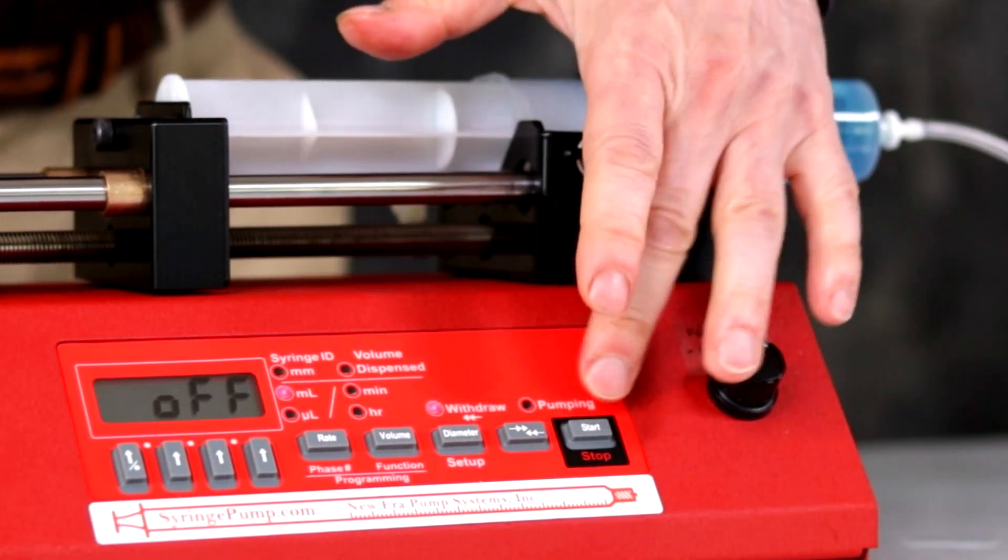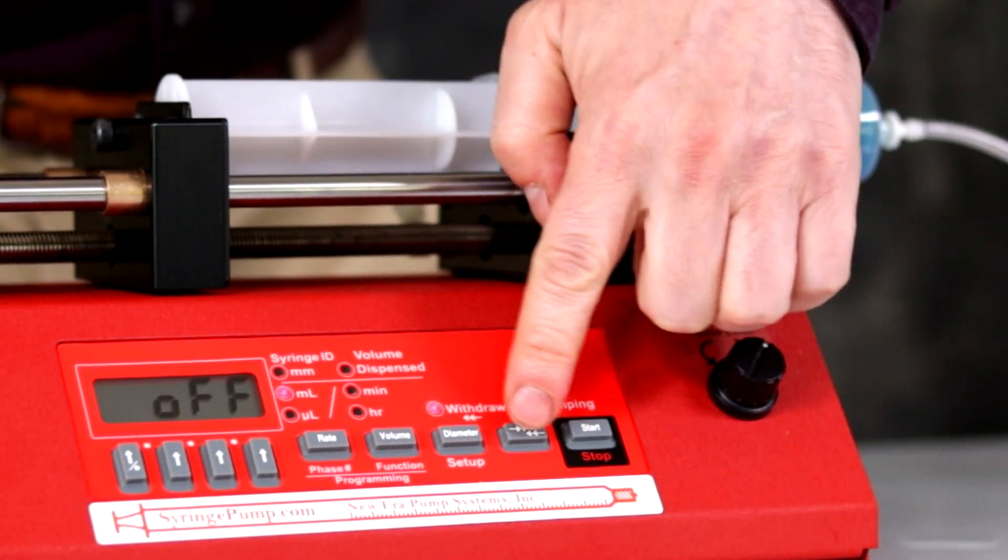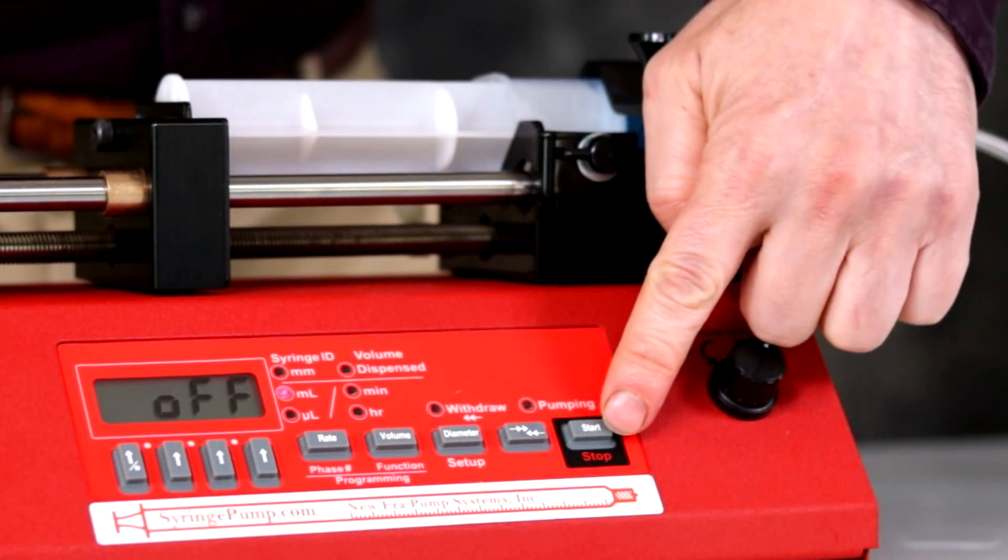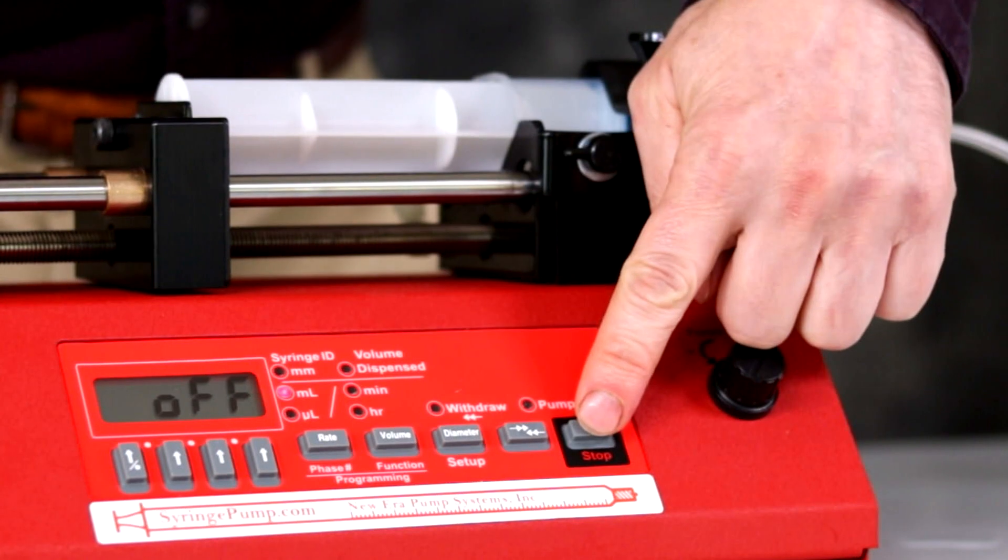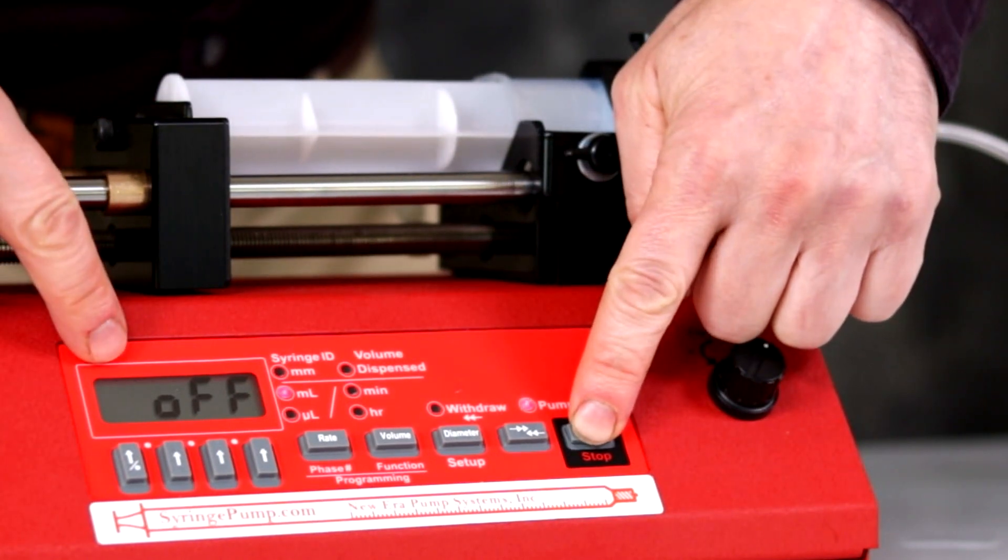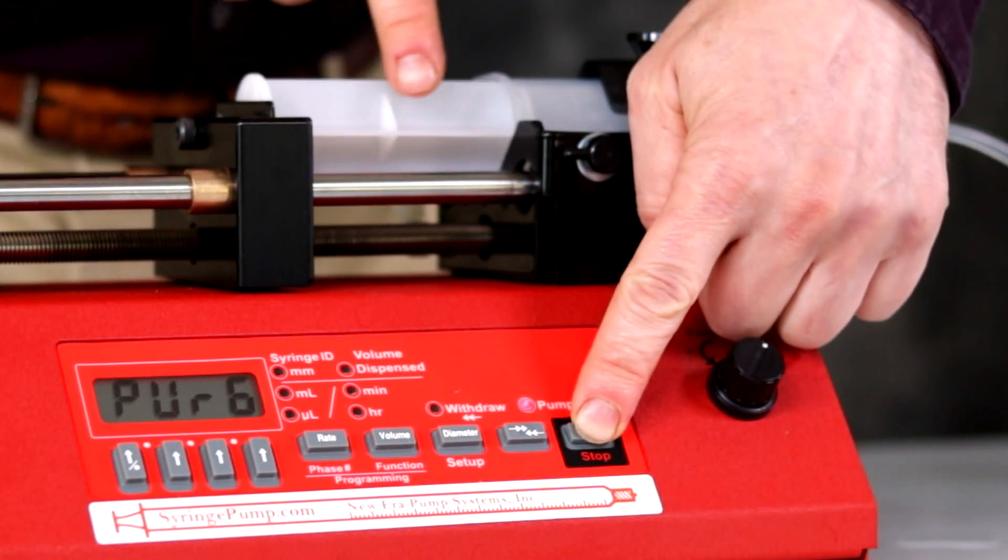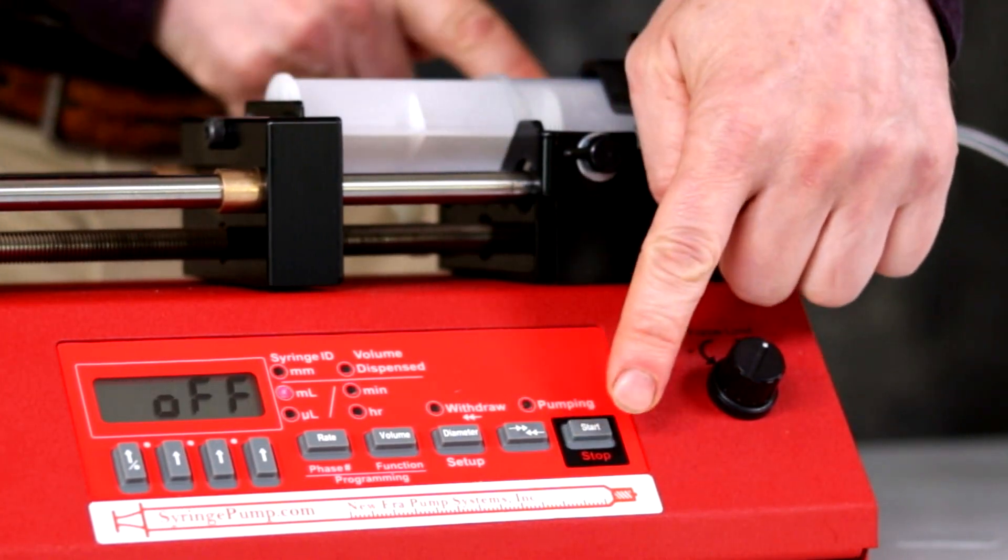Begin by purging the syringe. Make sure your direction is set for infusion. Press and hold the start key until you see PURG in the display. The pusher block will move. Once filled, remove your finger from the pump.